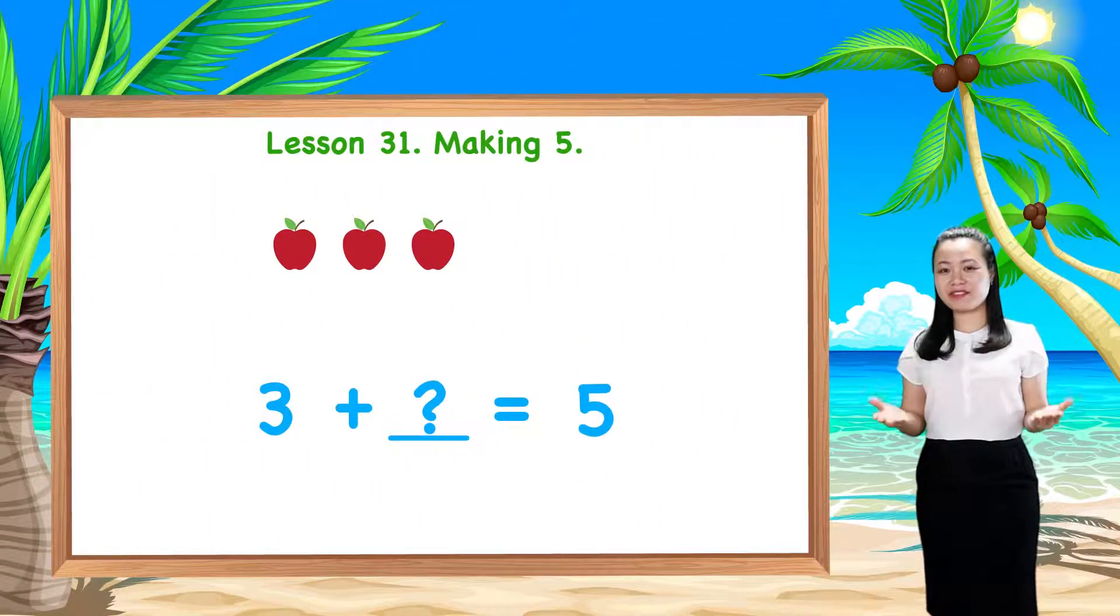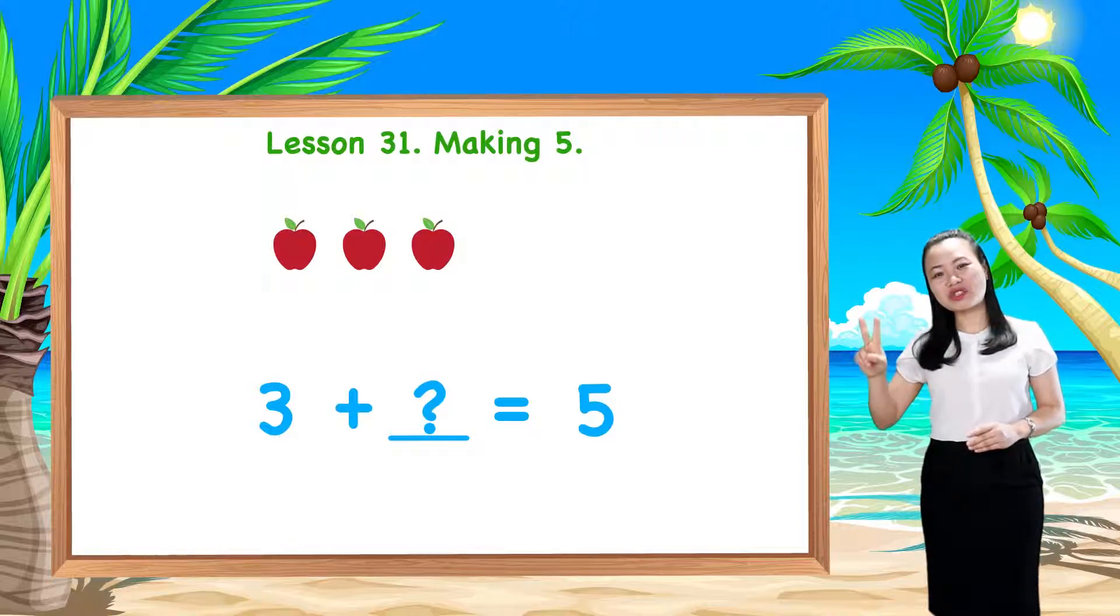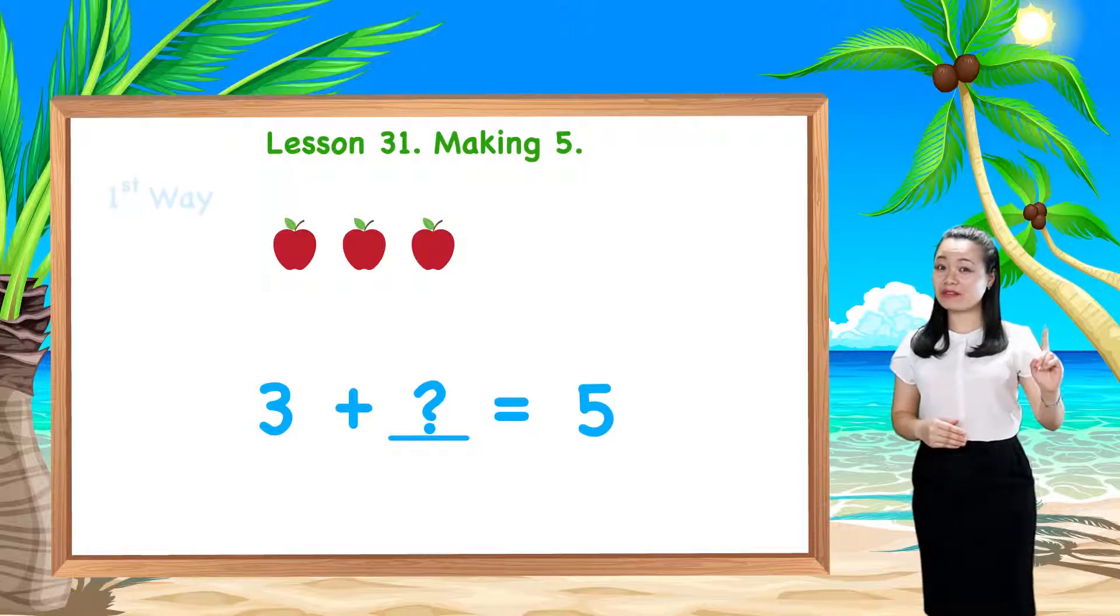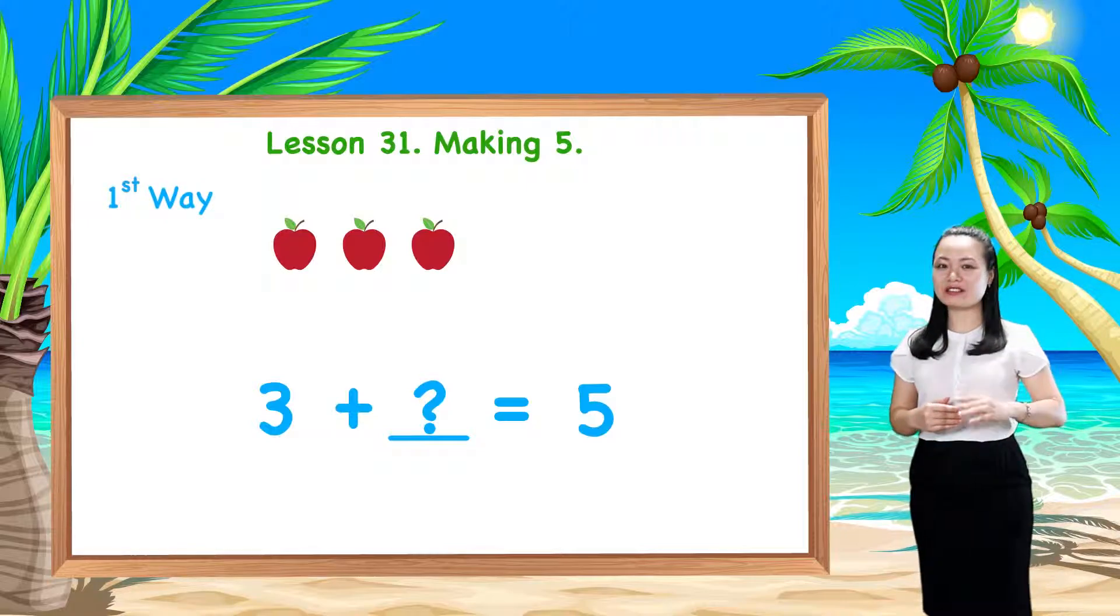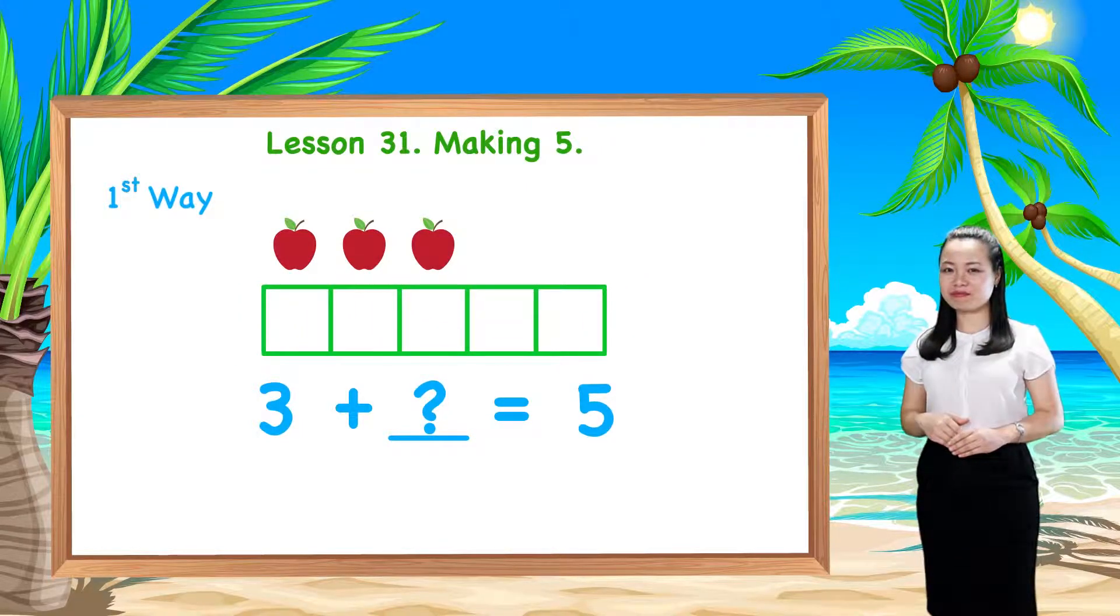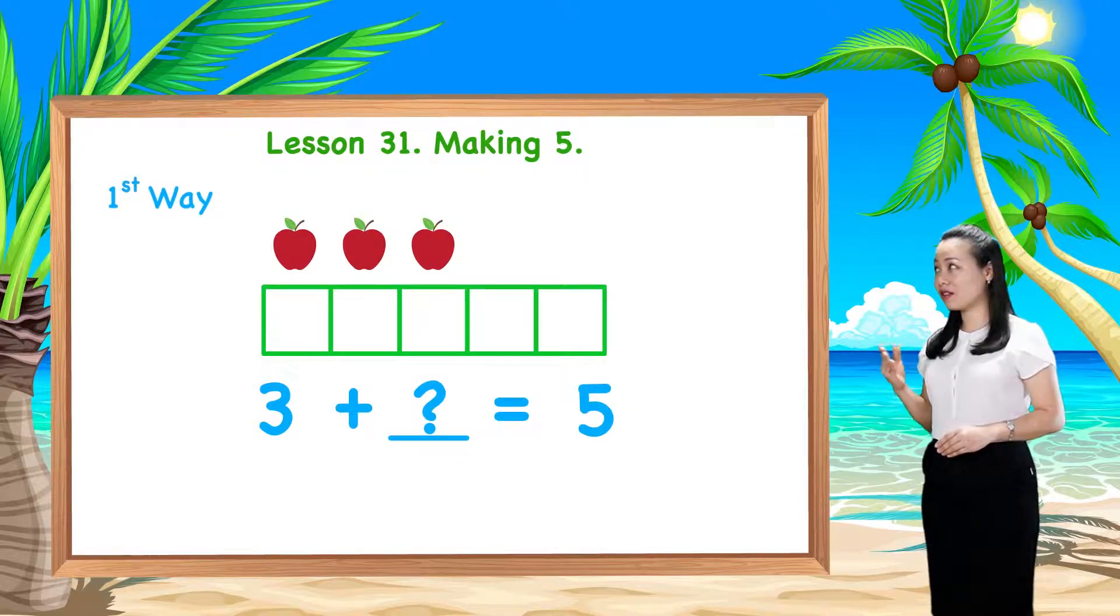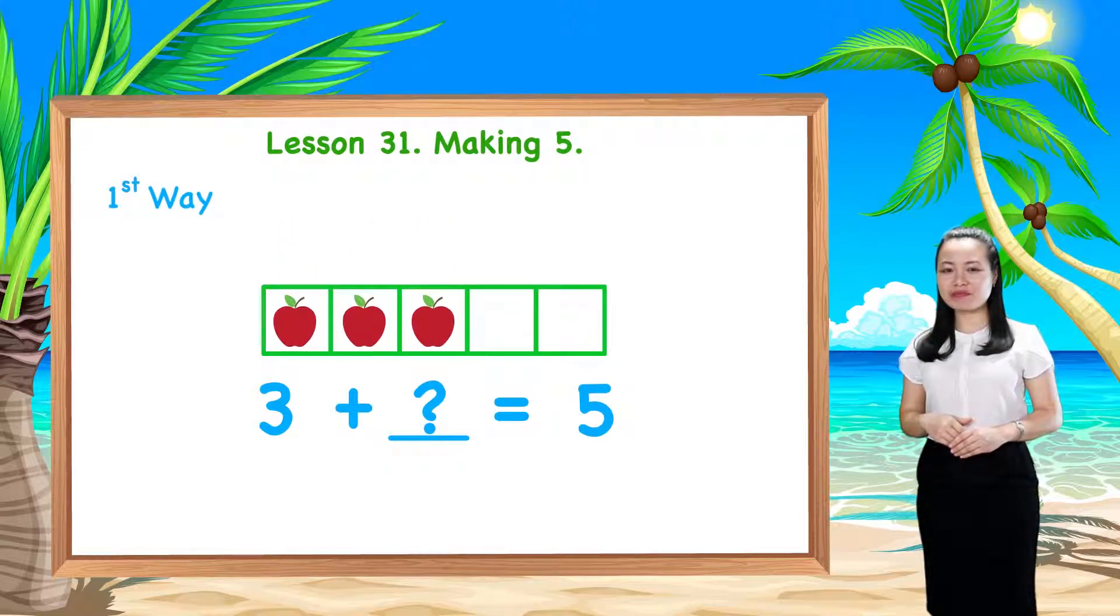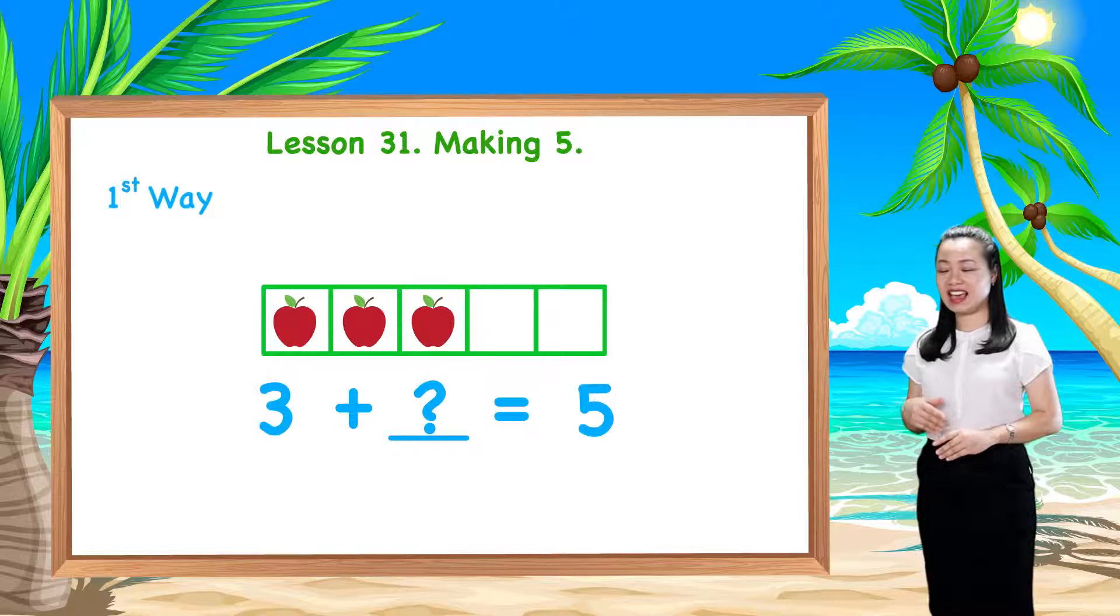To find the answer to this question, there are two ways. The first way is, imagine we have five empty boxes. Then, we put the three apples into three boxes. And you see, two boxes are still empty.